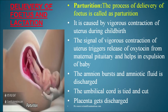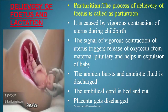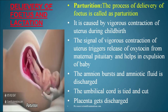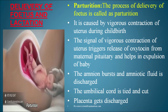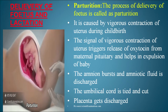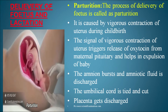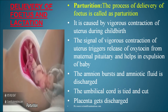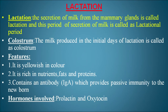The process of delivery of the fetus is called parturition. It is caused by vigorous contraction of the uterus during childbirth. The signal triggering vigorous uterine contractions is due to the release of oxytocin from the maternal pituitary, which helps in expulsion of the baby. The amnion bursts and amniotic fluid is discharged.